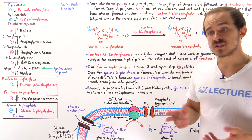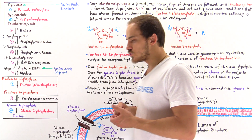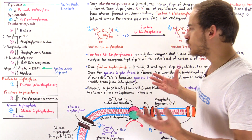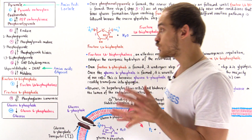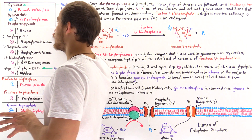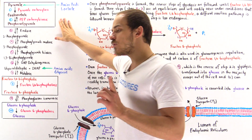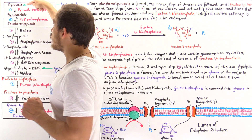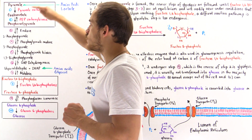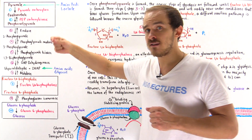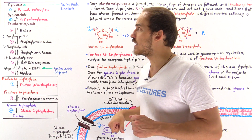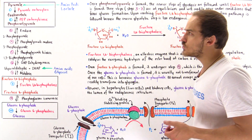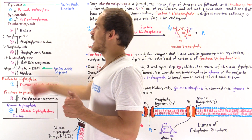In the previous lecture, we focused on the first two steps of gluconeogenesis. Now we're going to discuss the remaining steps. But before that, let's remember what happened in steps one and two. In step number one, which takes place entirely in the mitochondrial matrix, pyruvate is transformed into oxaloacetate by the enzyme pyruvate carboxylase. This reaction involves the carboxylation of pyruvate into oxaloacetate.